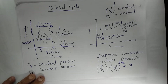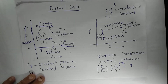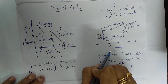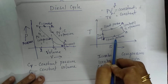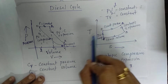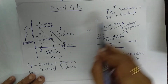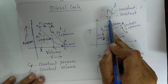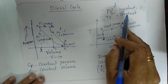The temperature-volume relation is TV raised to gamma minus 1 equals a constant. Now looking at the temperature-entropy (TS) diagram, we have constant pressure, constant volume, isentropic expansion, and isentropic compression. For the adiabatic process, PV^gamma = constant, and equivalently TV^(gamma-1) = constant.